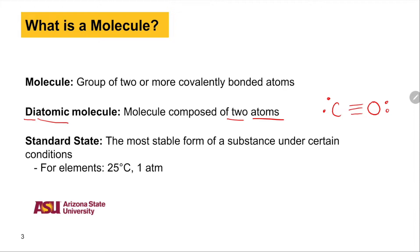Another term we'll be using in this video is standard state. Standard state is the most stable form of a substance under certain conditions. Elements are at standard state at 25 degrees Celsius and one atmosphere of pressure.